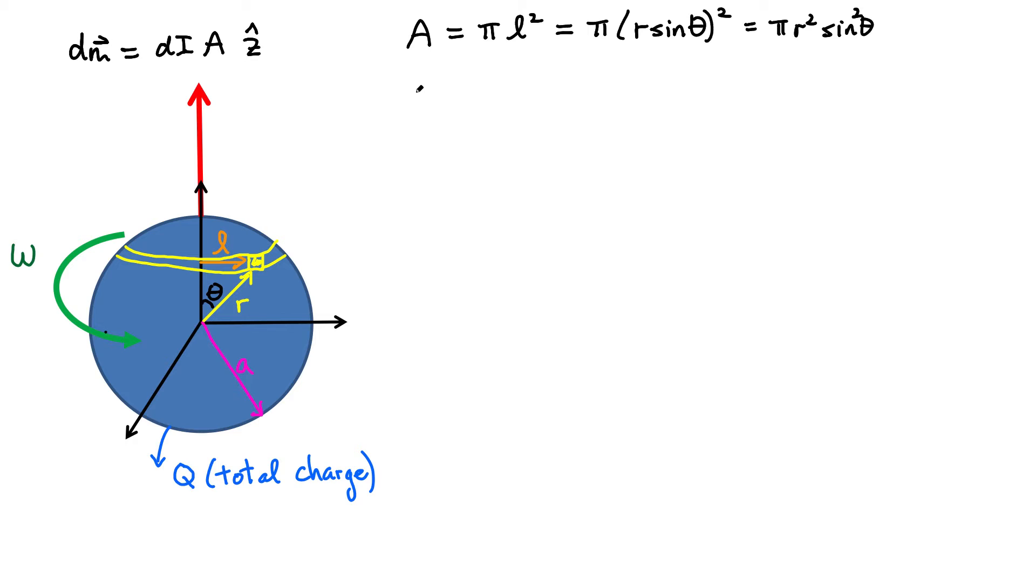Now we have to worry about the element of current. The element of current produced by this small individual charge is the magnitude of that small individual charge divided by how long it takes to complete one turn. If this object is rotating at some angular velocity omega, that's related to the period 2 pi over T. You could substitute that in. So what do we get? 2 pi divided by omega, and we still have our amount of charge. Let's now find an expression for DQ.